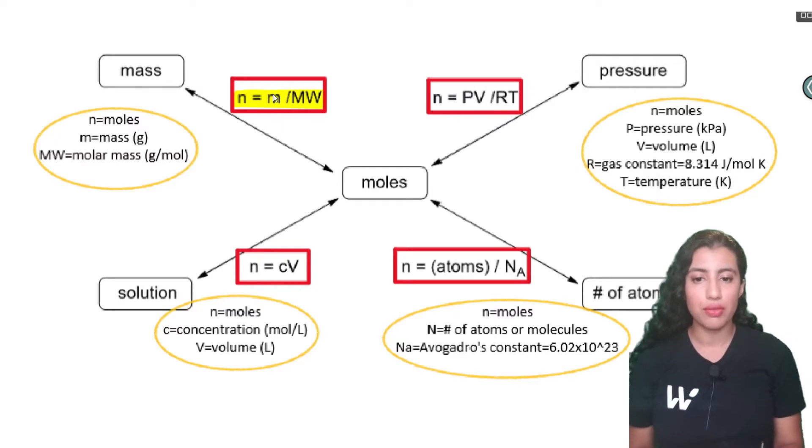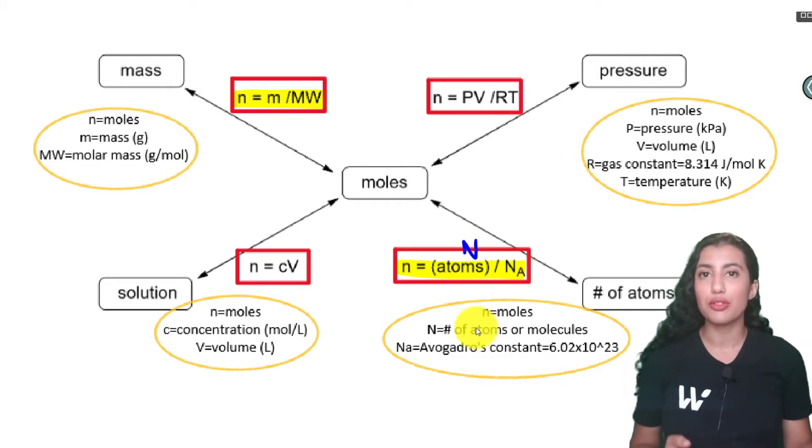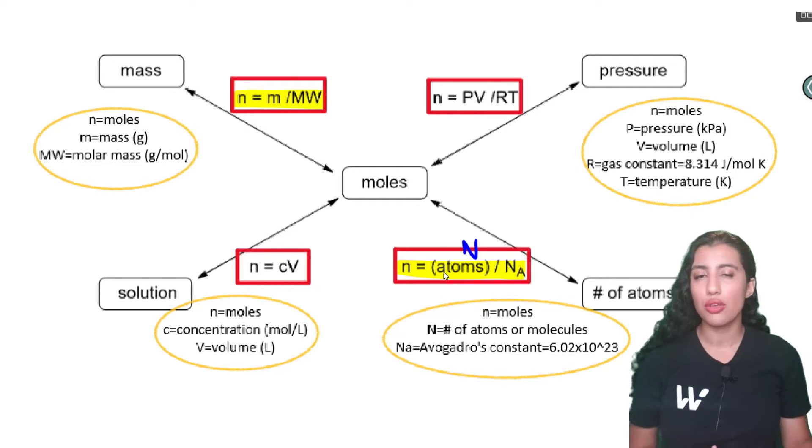The other equation that we've seen before is this one where it goes n is equal to big N over NA where your big N represents the number of atoms or molecules and your NA is Avogadro's constant. Now this one would be helpful if you're asked to solve for the molecules or how many molecules there are of a product. So you'd first have to solve for moles and then you can use this equation to solve for the molecules of that product. There are two other equations I wanted to introduce to you guys now so we'll see these in problems and they'll come in handy.